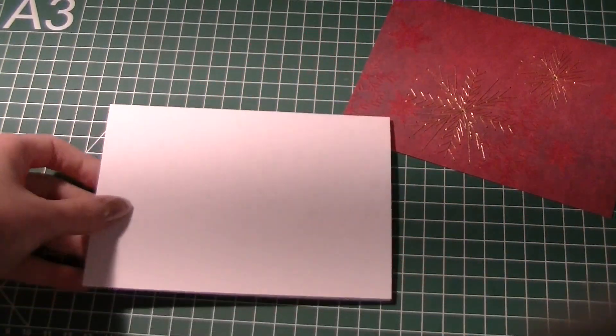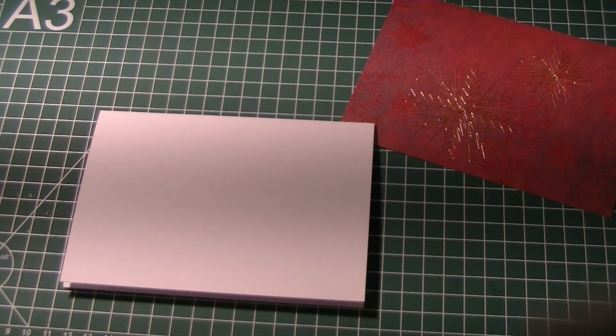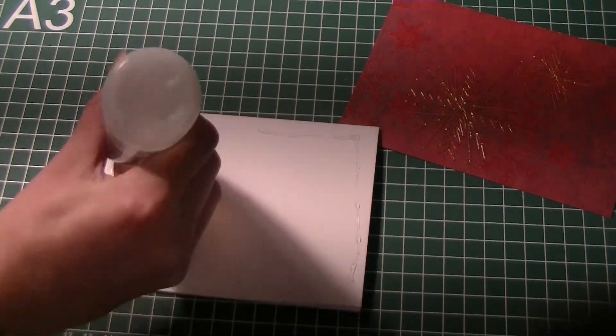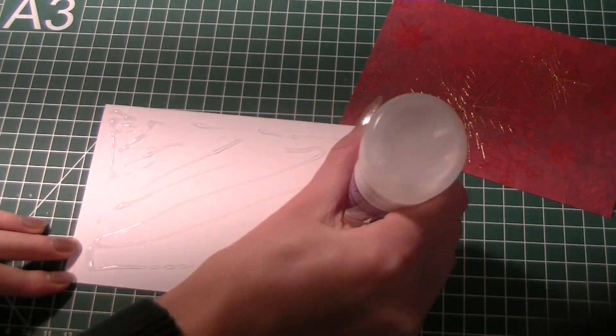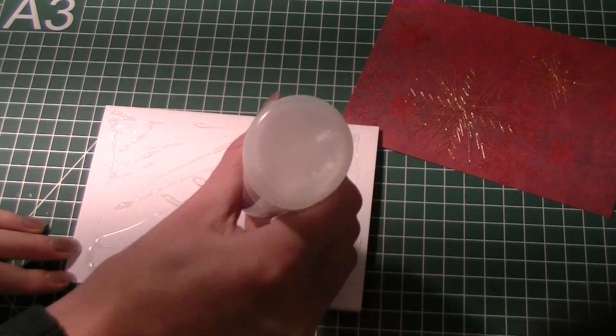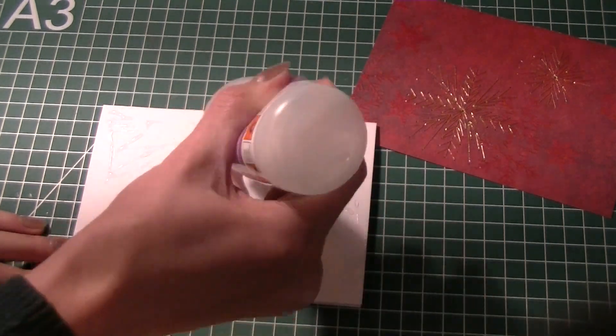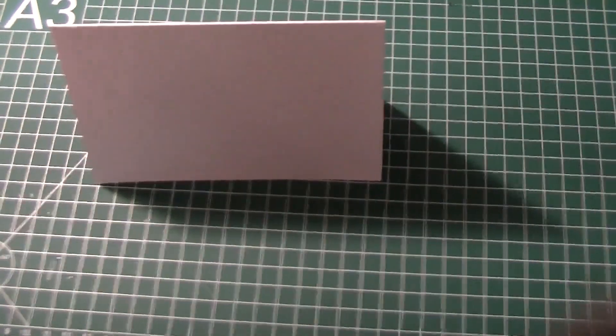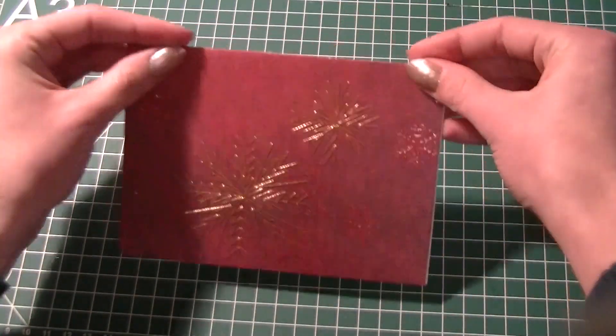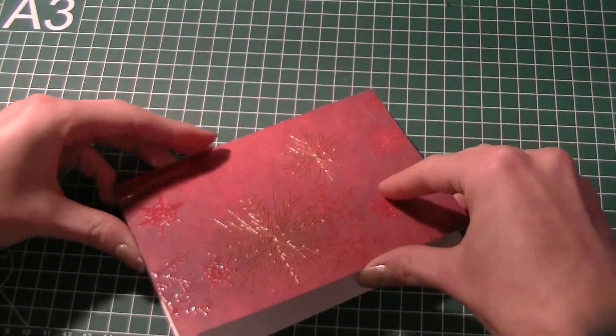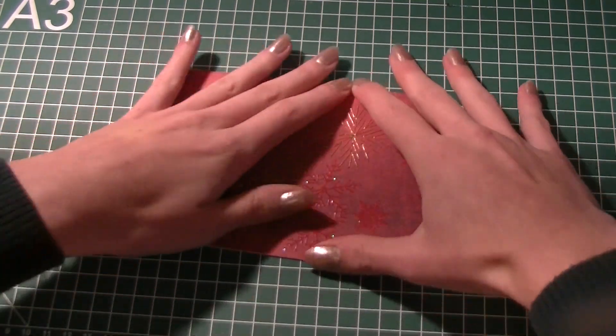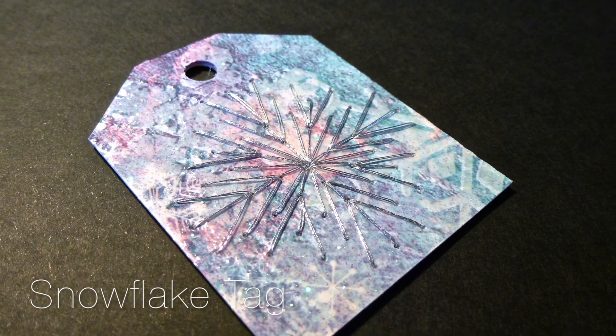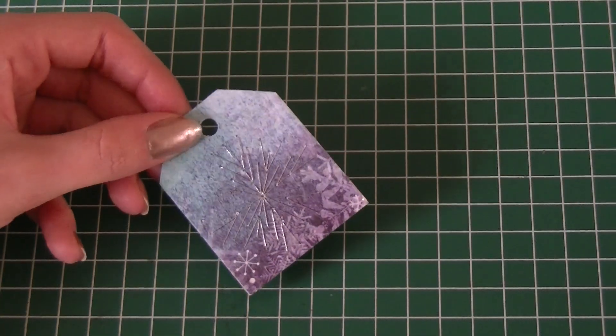When you finish the embroidery, you can use some glue to secure the cardboard on the front of the card. You can use the small snowflake design to make a tag to put on a gift.